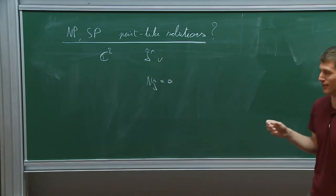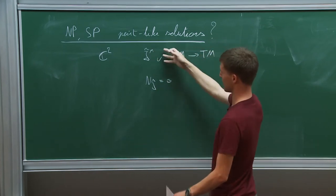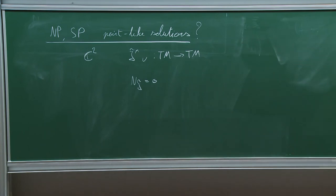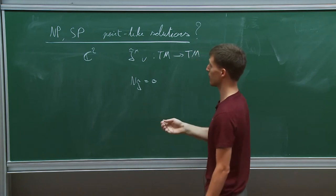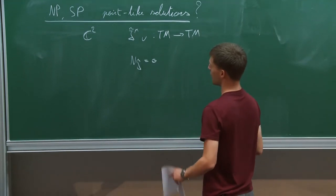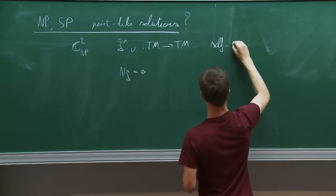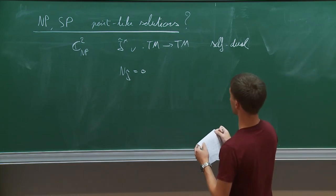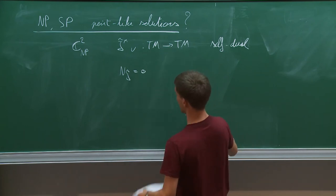So we have this almost complex structure which can be defined using the Killing spinors, much as Guido was doing this morning. Globally on S^4 you cannot define such a thing, but in the patch containing the North Pole and separately in the patch containing the South Pole you can define it — it is integrable and the Nijenhuis tensor is zero. Around the North Pole this almost complex structure is self-dual.